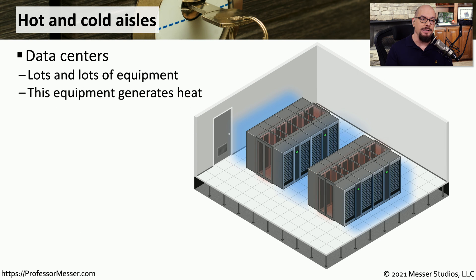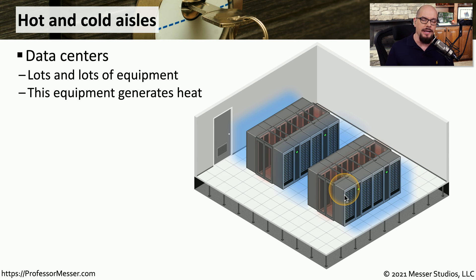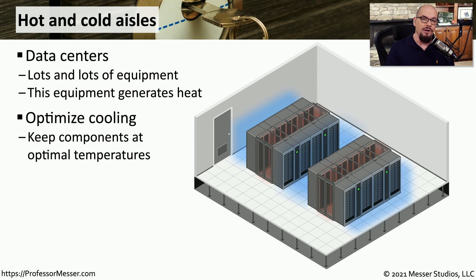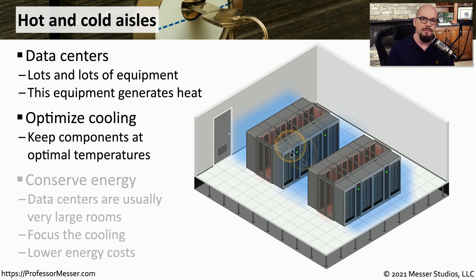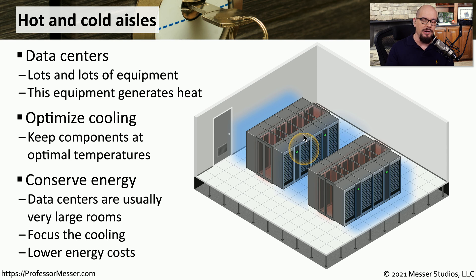Another important secure area in a data center are the hot and cold aisles used in that facility. In a data center, we have a lot of equipment, usually stored in racks, and all of that equipment is constantly generating heat. To offset all of this heat, we usually have extensive cooling systems in these data centers that keep all of the equipment in the racks at an optimal temperature.